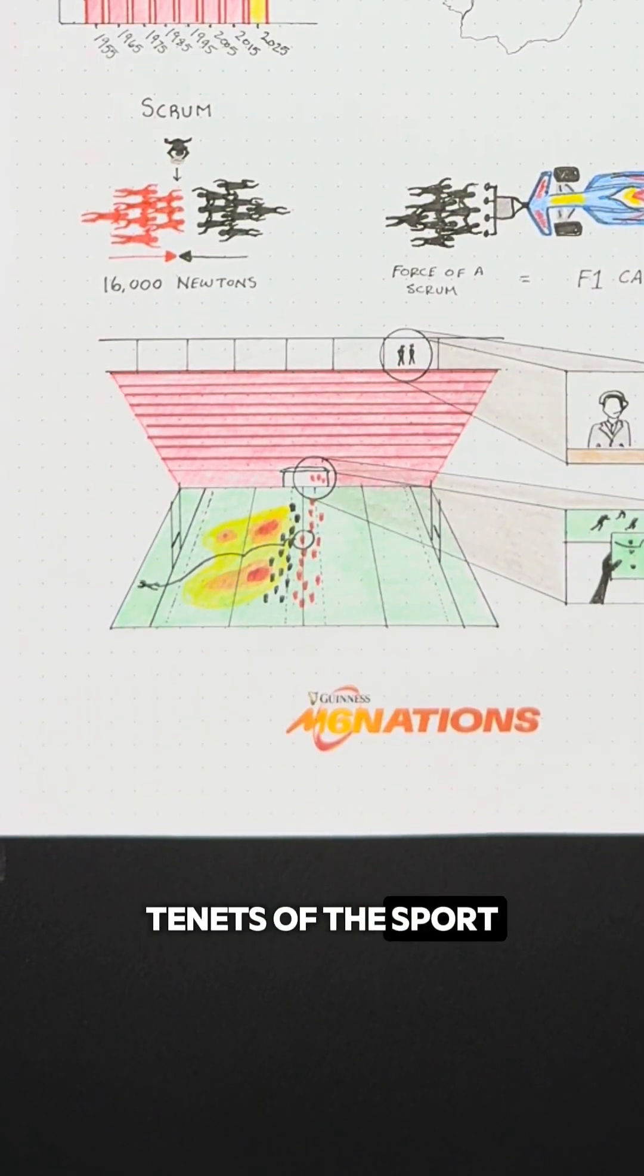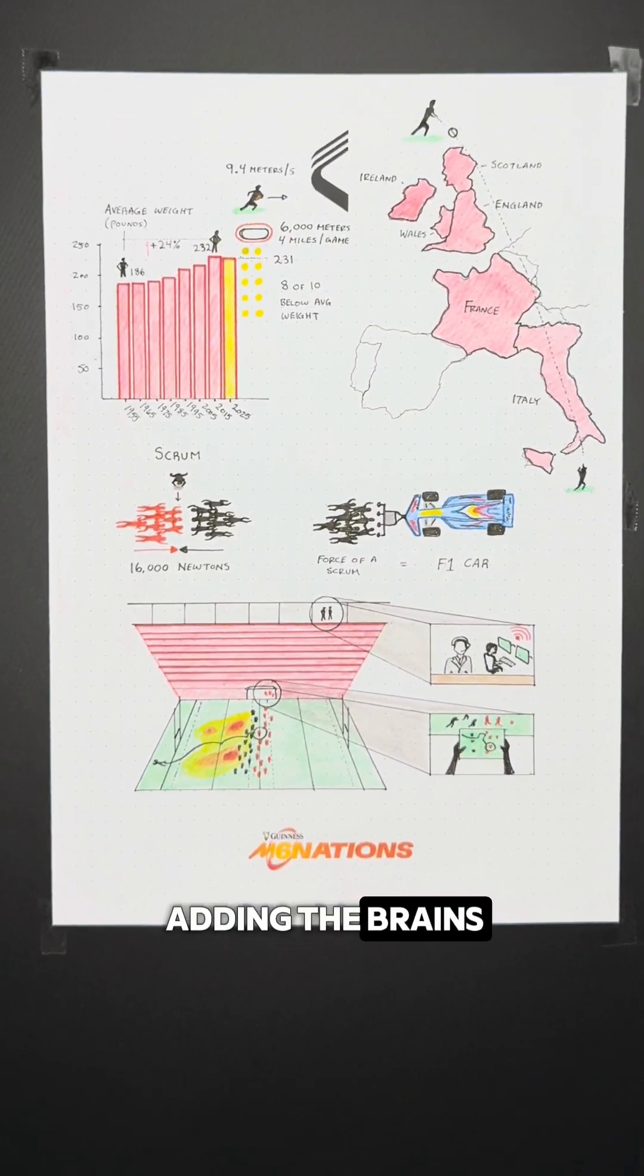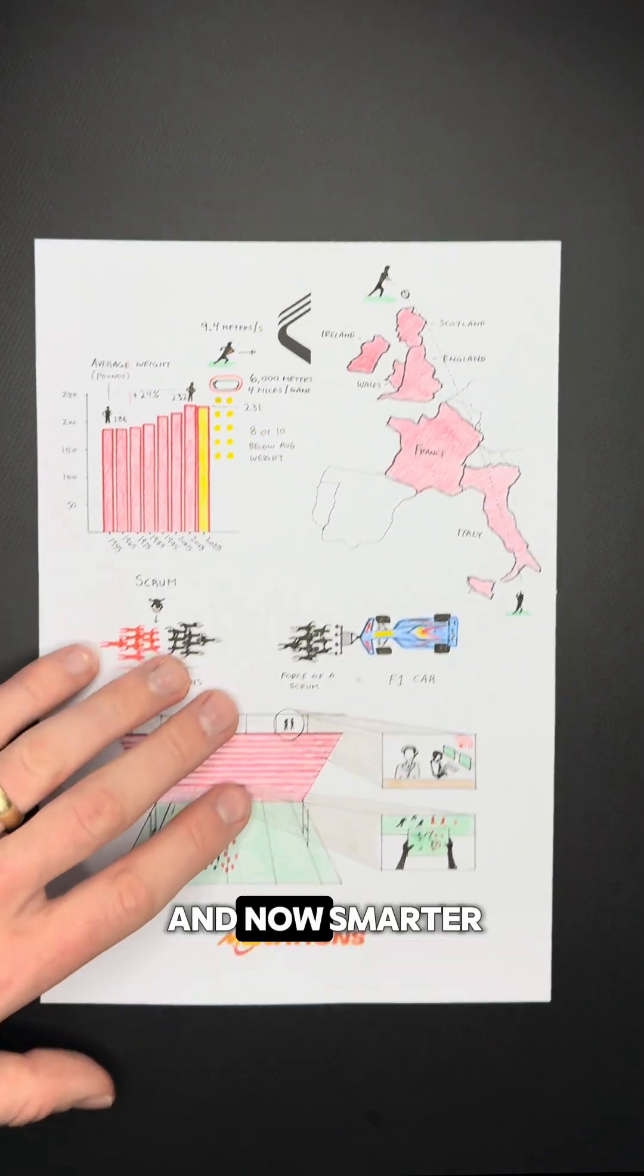So while size and speed are still core tenets of the sport, rugby is evolving by adding the brains with data and video as teams play harder, and now smarter.